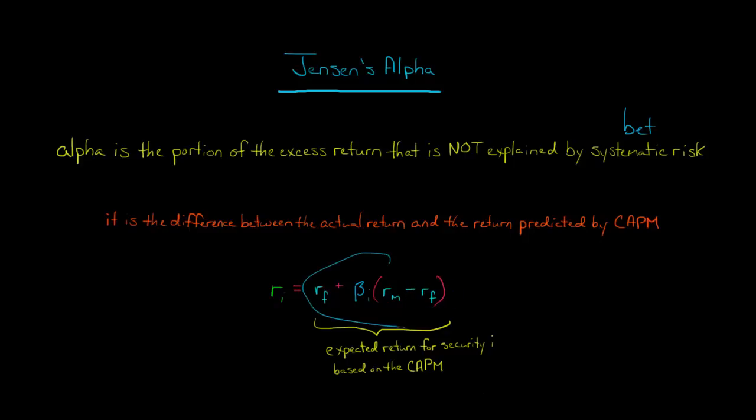All this right here is going to tell us the expected return for that security, that share of stock, or that portfolio. Let's just say that we calculate this out and we say, for this particular stock, we're expecting a rate of return of 12%. This is the expected rate of return based on CAPM.